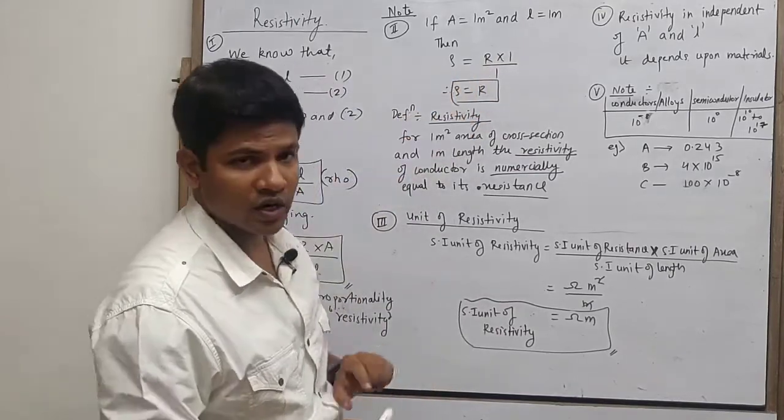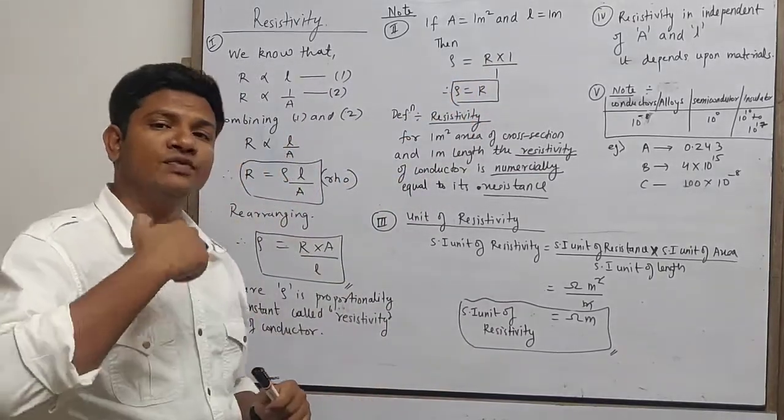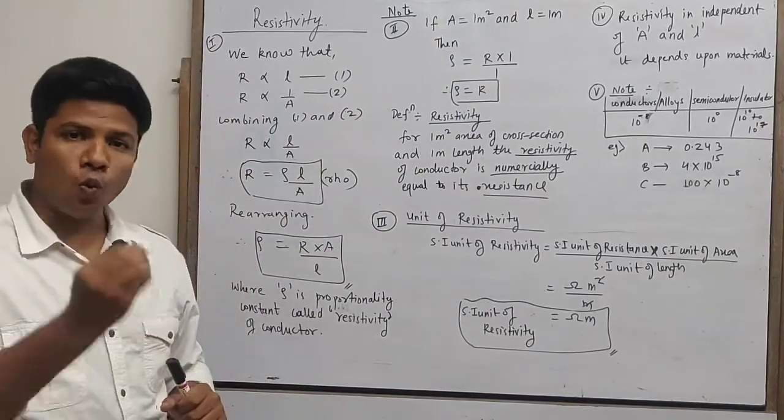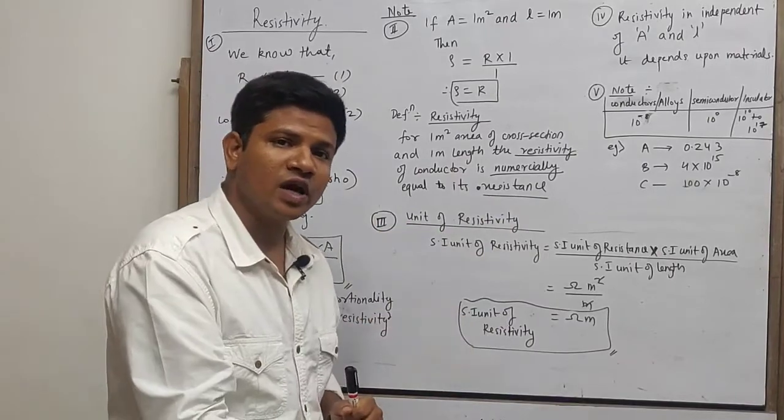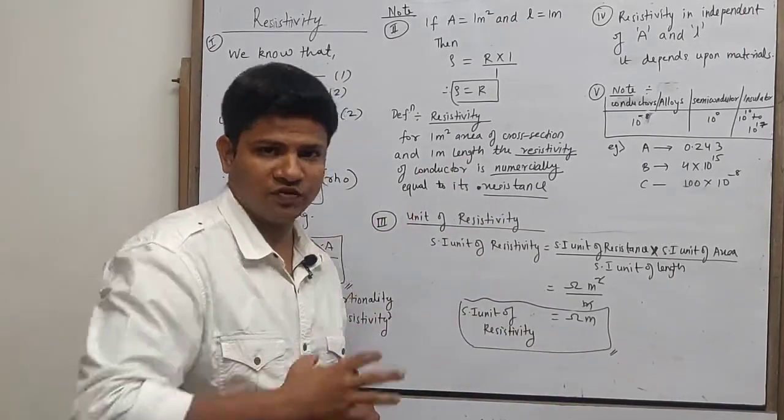In this case, resistivity equals to resistance of the conductor. So here we define resistivity. For 1 meter square area of cross section and 1 meter length, the resistance of the conductor is equal to its resistivity.